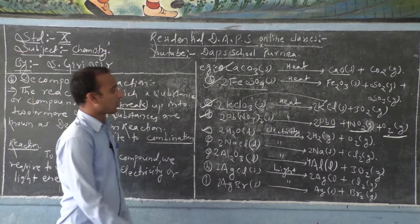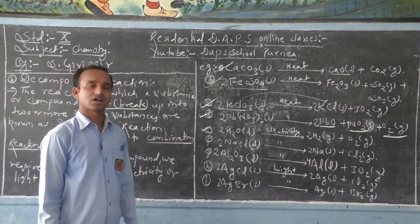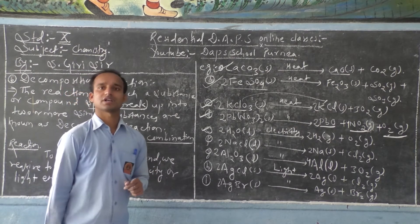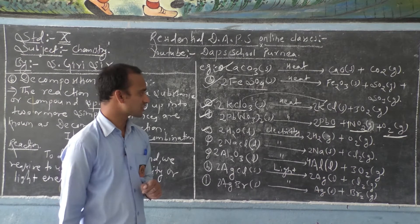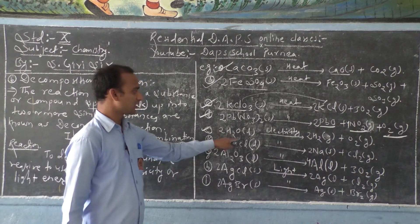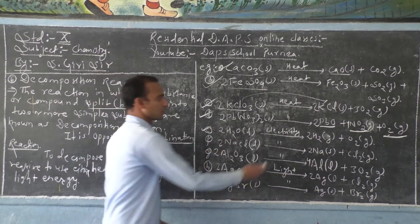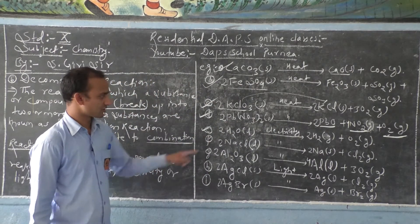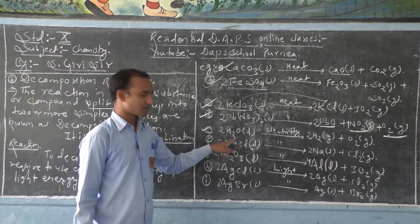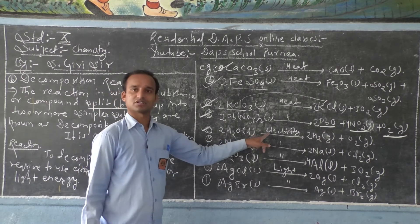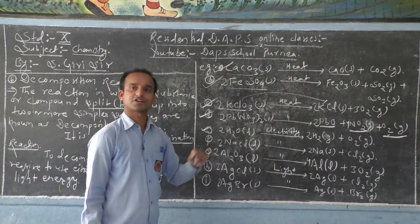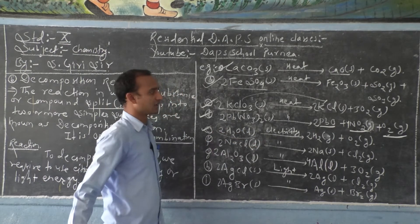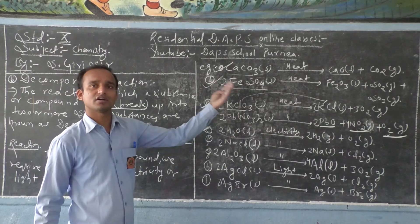Number E: when you conduct the electrolysis of water — because when you burn hydrogen gas in oxygen it produces water by combination reaction — now when you supply electrical energy and conduct the electrolysis of water, this water breaks into hydrogen gas and oxygen gas.